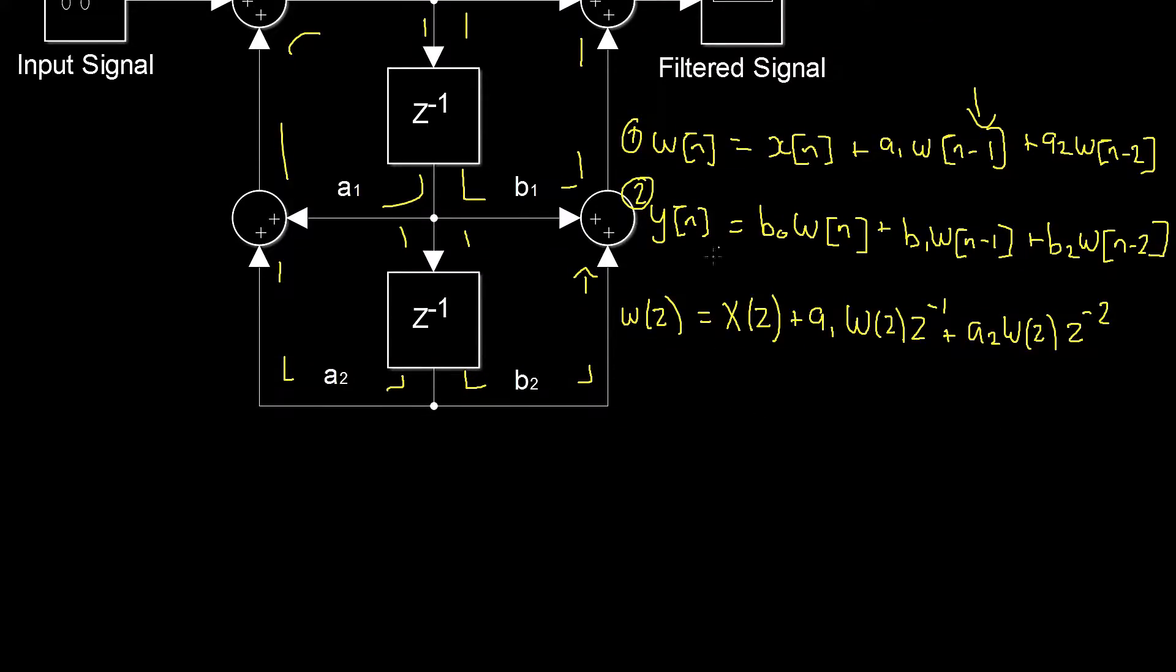We can repeat this process for the y of n, which will give us... Okay, so we now have all of the components that we need to calculate our h of z. Okay, so we can isolate x of z by subtracting a1 w of z times z to the power of negative 1 plus a2 w of z times z to the power of negative 2 from both sides of this equation. On the right hand side we'll have w of z minus a1 w of z times z to the power of negative 1 minus a2 w of z times z to the power of negative 2, and that's all equal to x of z.